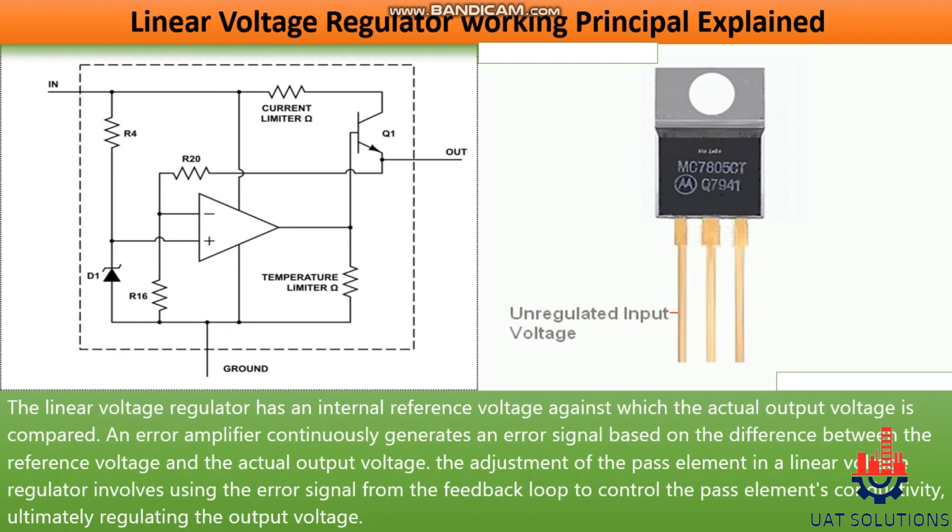The adjustment of the pass element in a linear voltage regulator involves using the error signal from the feedback loop to control the pass element's conductivity, ultimately regulating the output voltage.